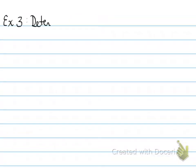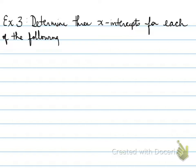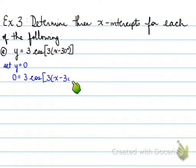Next example, Example number 3. What I want you to do with example number 3, and a lot of you who are continuing to watch this video will notice that I have an extension to this. This is something that was covered with a few students but not all, and I want everyone to have at least seen this part. Determine three x-intercepts for each of the following. Part A: y = 3cos[3(x-30°)].